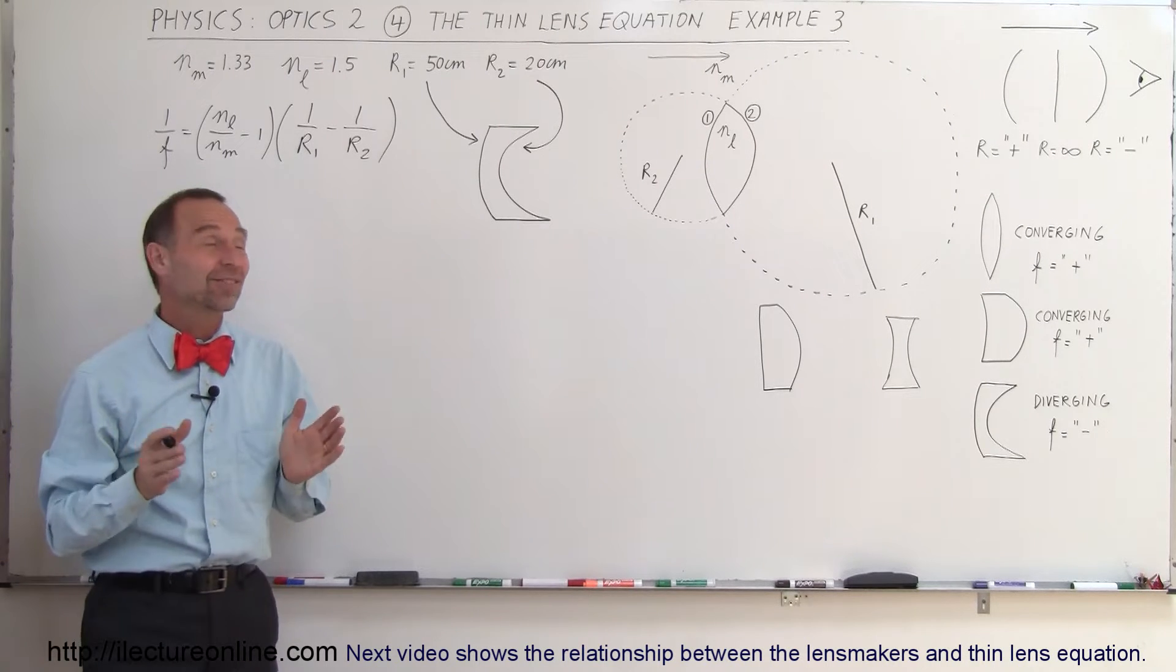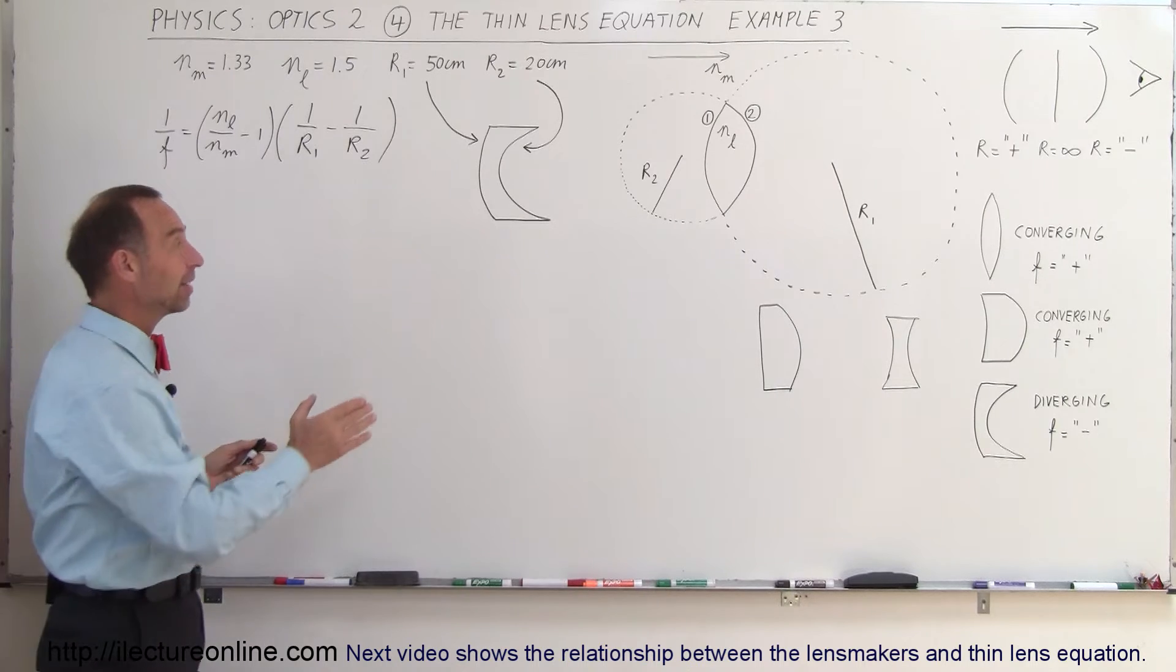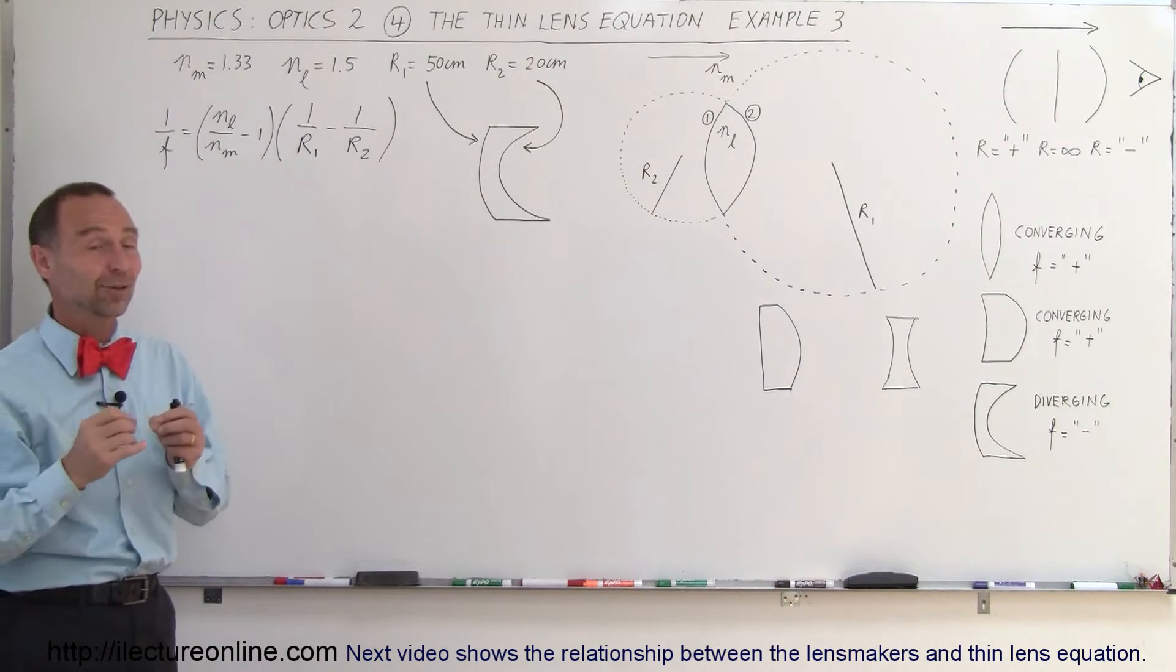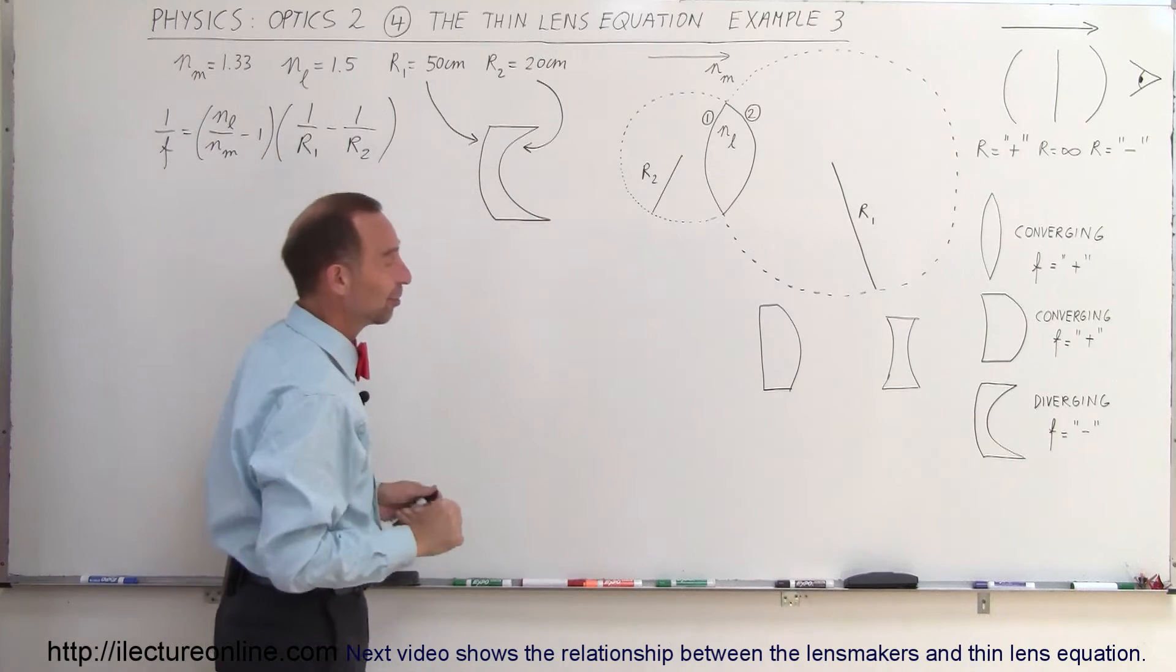Welcome to Electroline and in this third example we have a diverging lens. At least if we place the lens in a medium that has an index of refraction that's smaller than the index of refraction of the lens, this should be a diverging lens.